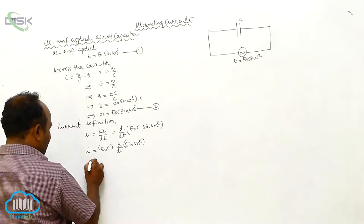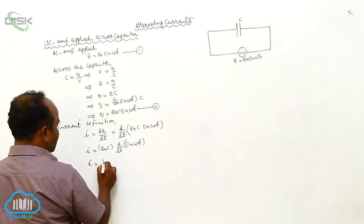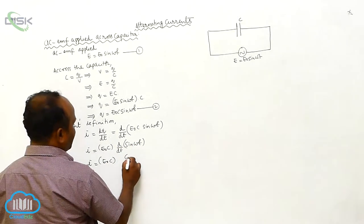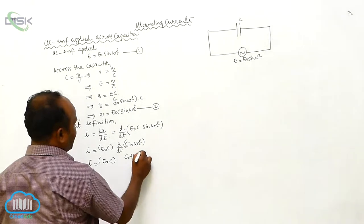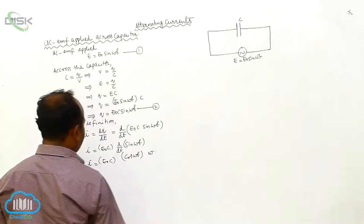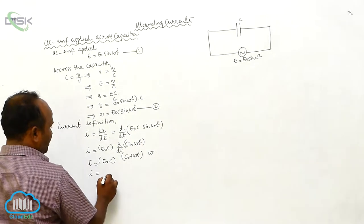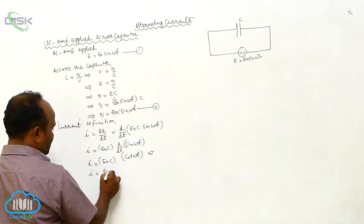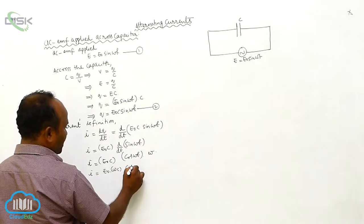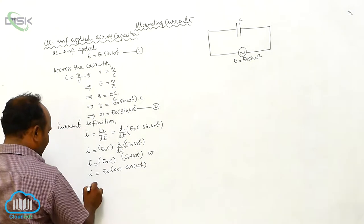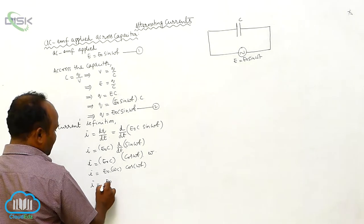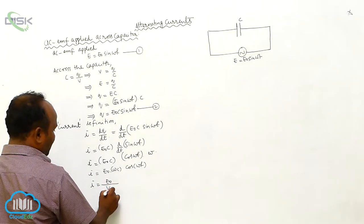The differentiation of sin(ωt) gives cos(ωt), and differentiating ωt gives ω. Therefore i = E₀ωC cos(ωt), which may be written as i = (E₀ / (1/ωC)) cos(ωt).